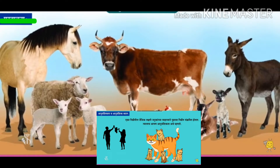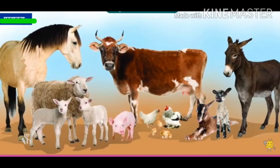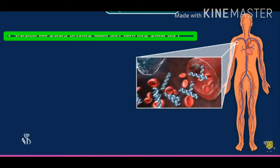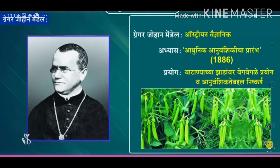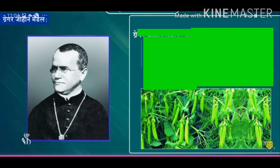Heredity is the transfer of biological characters from one generation to another via genes. Gregor John Mendel is the pioneer of modern genetics, around the period of 1886.